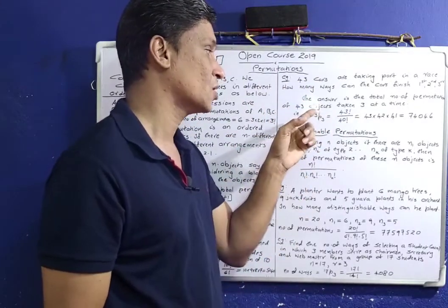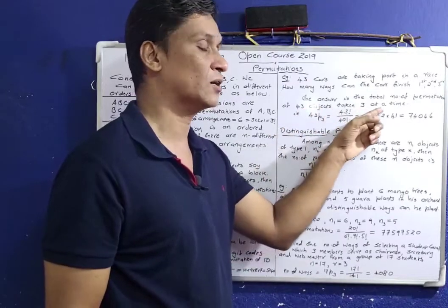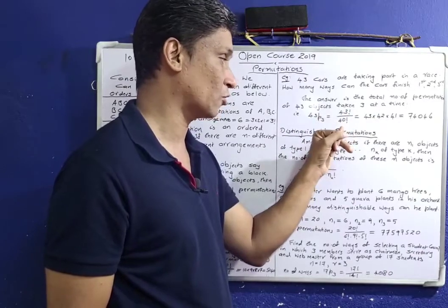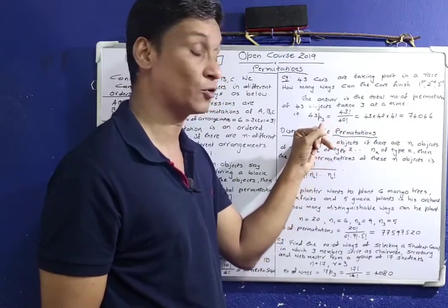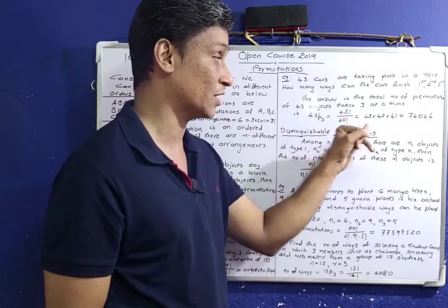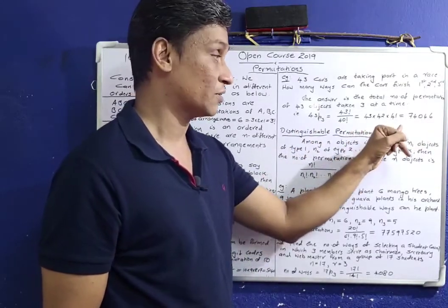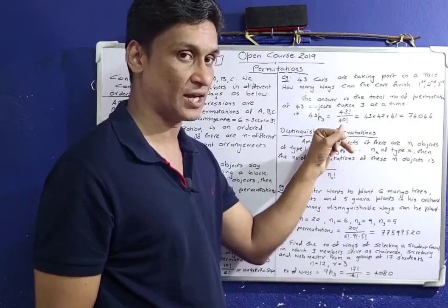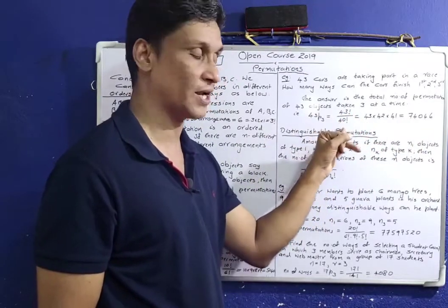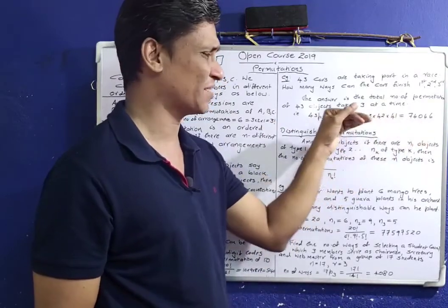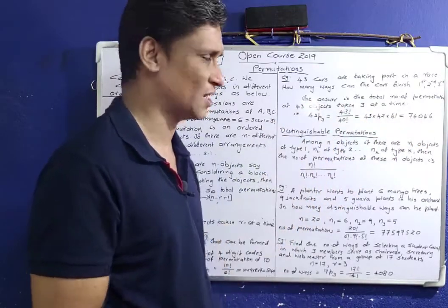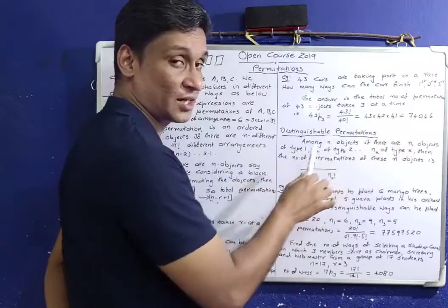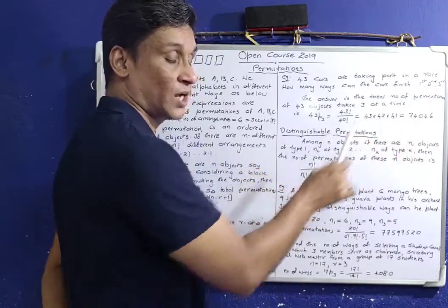That is the number of permutations of 43 objects taken 3 at a time — that is 43P3 — equals 43 factorial divided by 40 factorial. The answer is 74,046 arrangements.